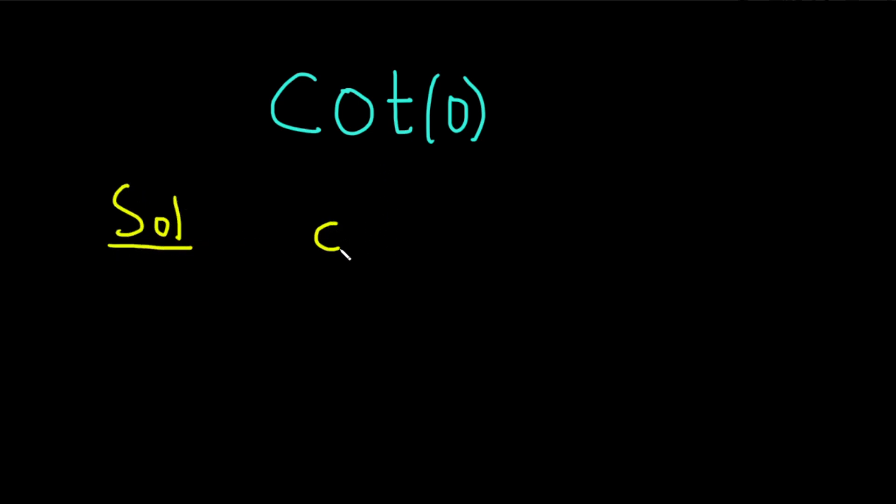So first, let's think about cotangent of x. There's a couple different ways to think about it. You can think about it as cosine over sine or 1 over tangent. I'll just think of it as 1 over tangent for the purposes of this video.